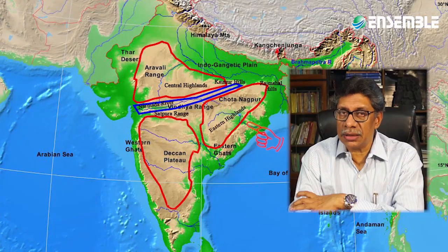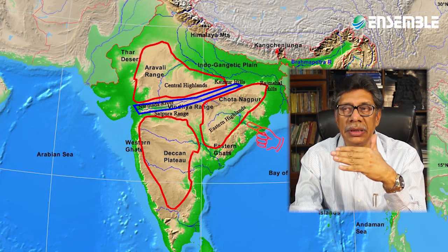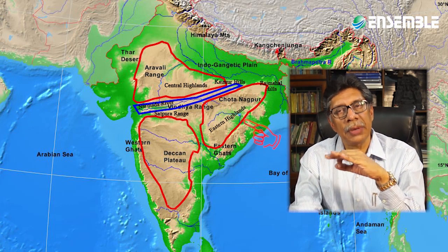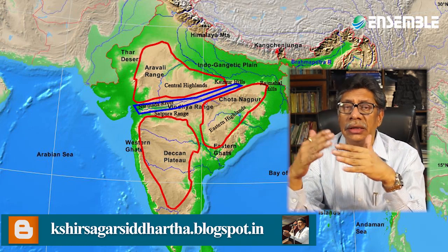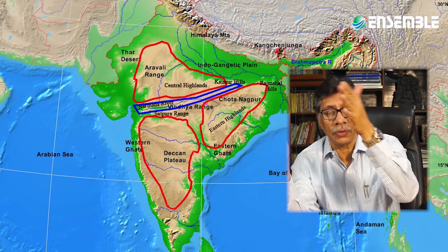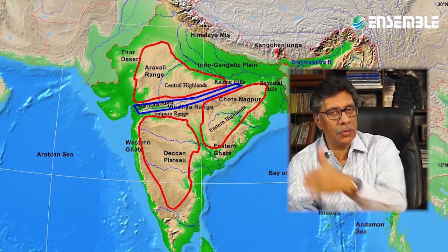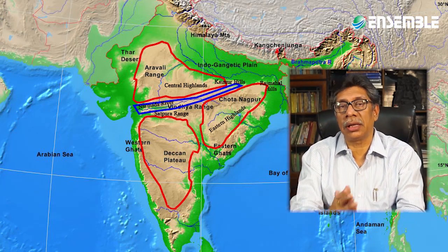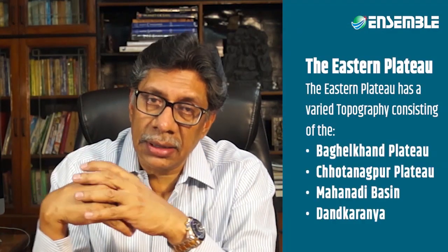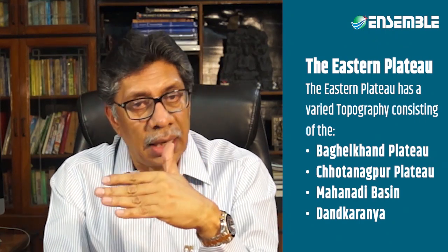The Eastern Highlands has a varied topography, comprising plains and a variety of topographic structures. Some of them can be in the form of a dome, some in the form of a flood region, some in a bowl-shaped depression, and some can be a boat-like basin. This part of the Peninsular Plateau consists of Bahilkhan Plateau, Chhotanagpur Plateau, Mahanadi Basin, and Dandakaranya.